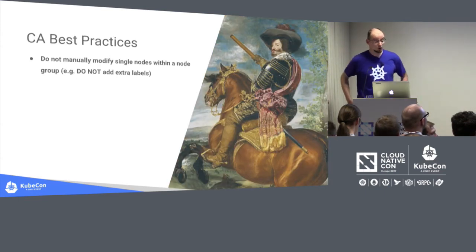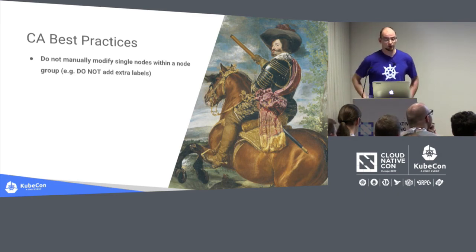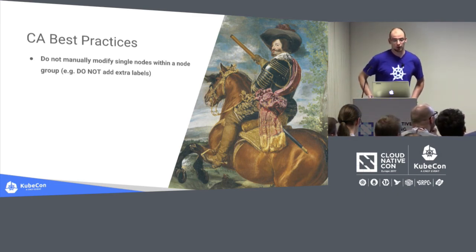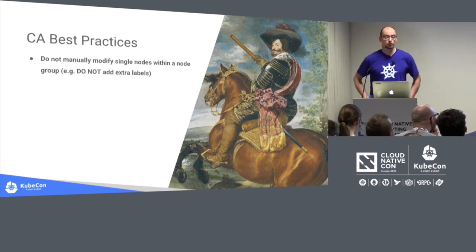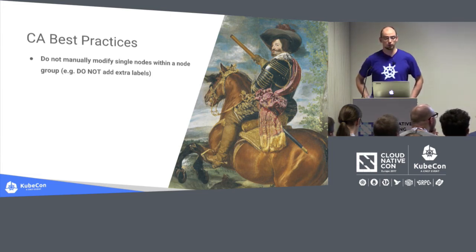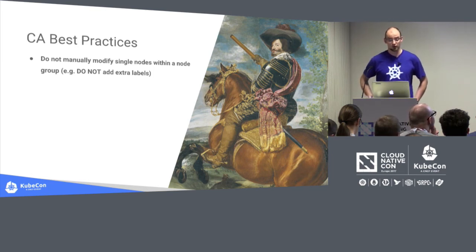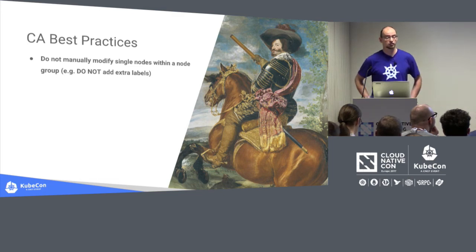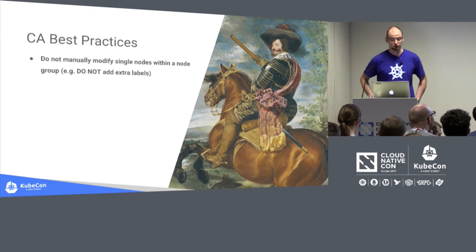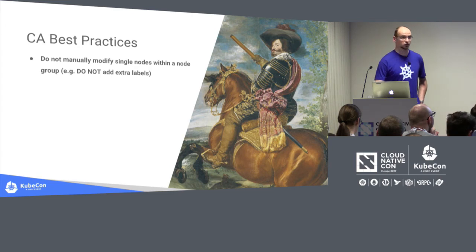Best practices for running cluster autoscaler: do not modify nodes manually. Cluster autoscaler assumes all nodes in a node group look the same — same CPU, same labels. When a node group expands, the new node is expected to look the same and host the same DaemonSet and manifest-run pods as existing nodes. If you modify nodes manually, the behavior of cluster autoscaler may be broken.